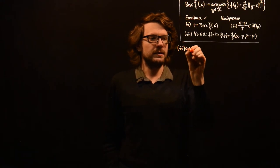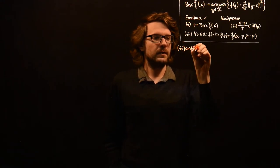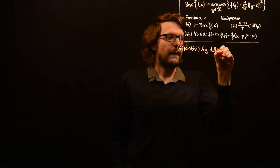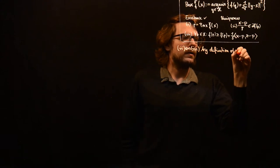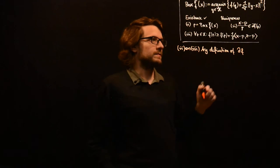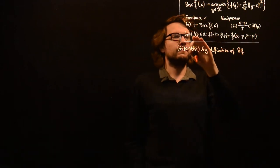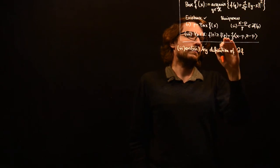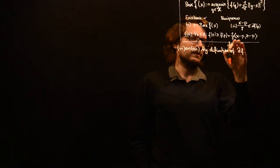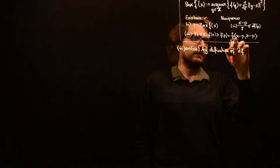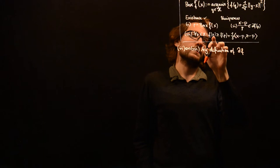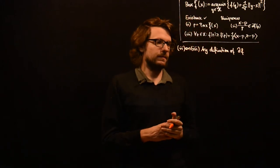2 is equivalent to 3 just by definition of df. What does df of p mean? That means that for all z in H, f of z is greater or equal than f of p plus this subgradient, which is 1 over gamma times x minus p, in the inner product with the difference of z and p. So that's just the definition.